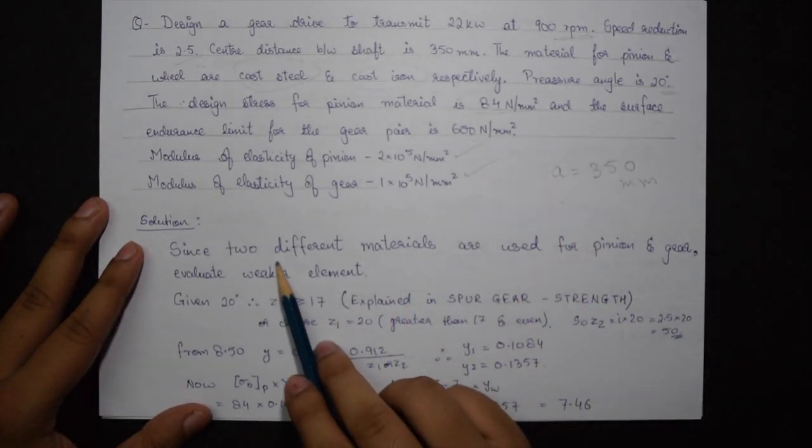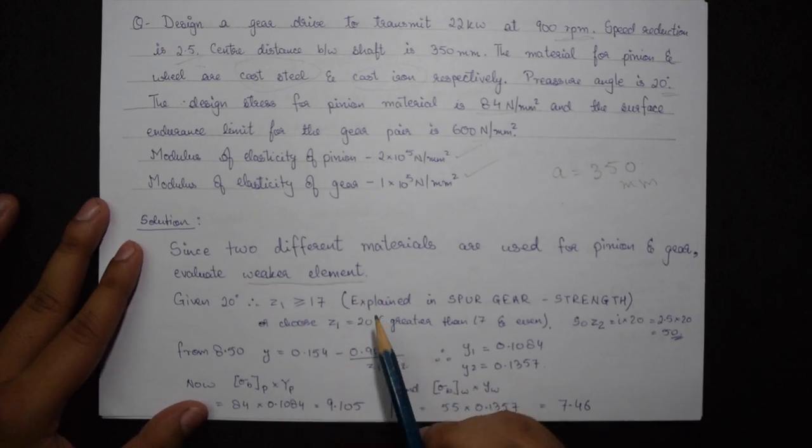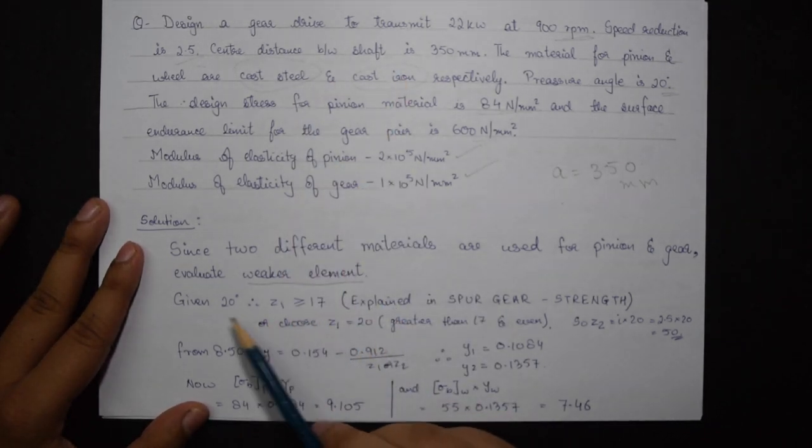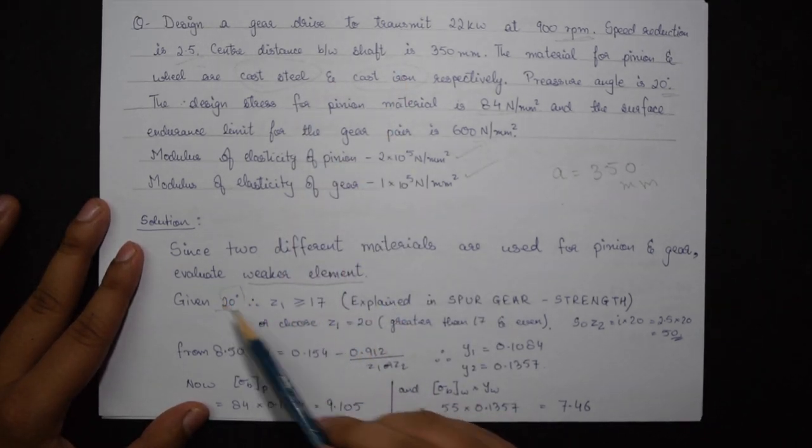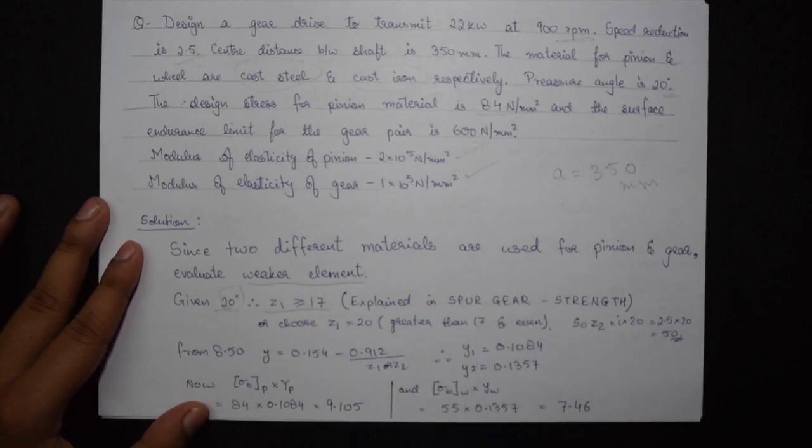Before going to the procedure we need to find the weaker element because both the materials are specified. For 20 degree condition we know that Z1 is greater than equal to 17. This concept was explained in spur gear under strength consideration.